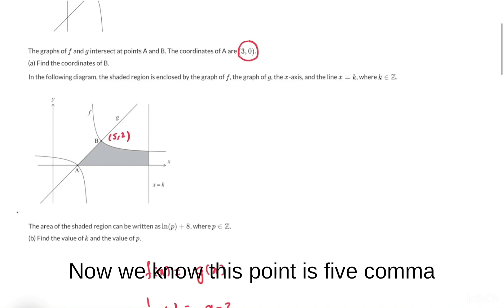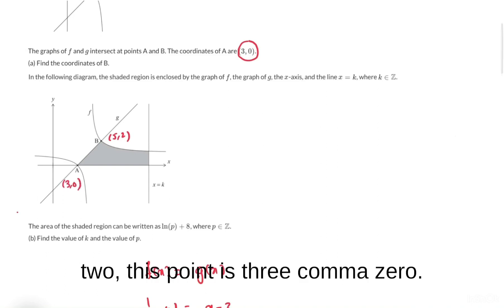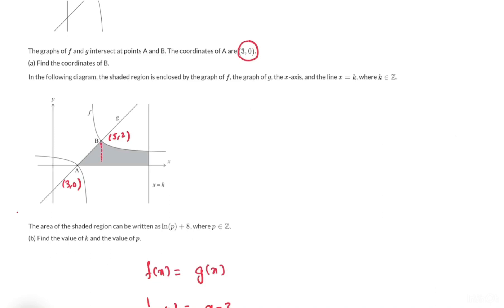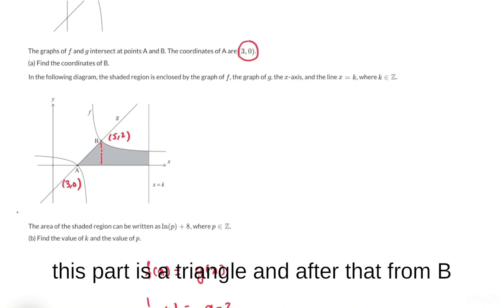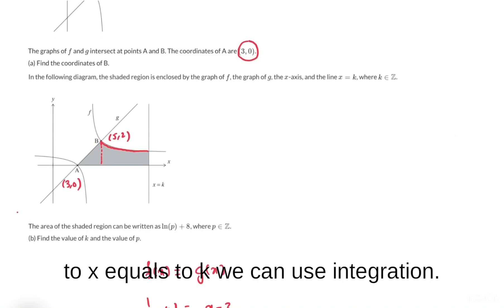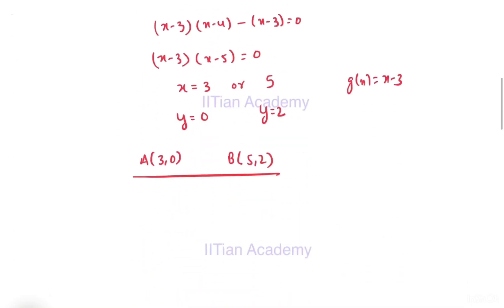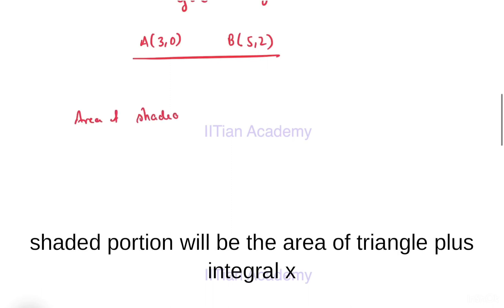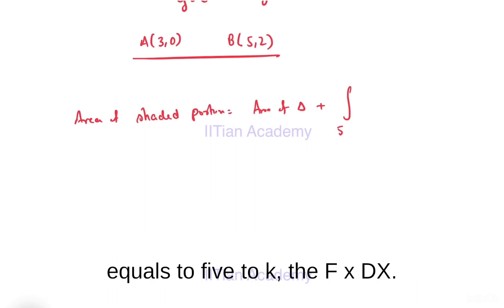We know this point is (5, 2) and this point is (3, 0). To find the area of the shaded portion, we know this part is a triangle, and after that from B to x = K we can use integration. So the area of the shaded portion will be the area of the triangle plus the integral from x = 5 to K of f(x) dx.